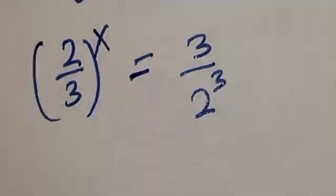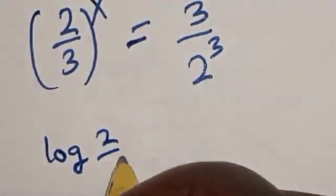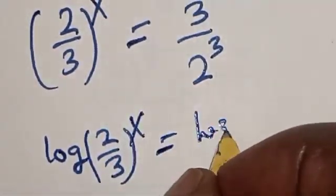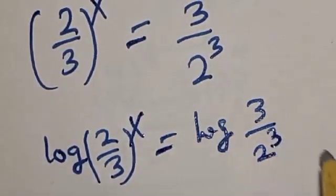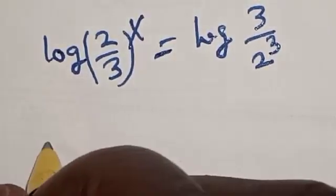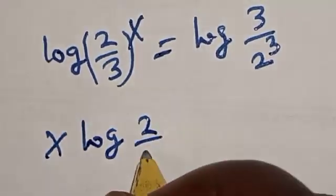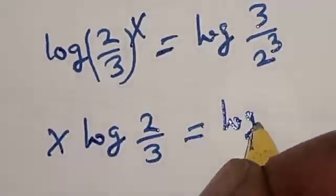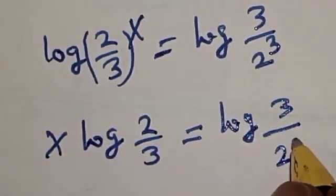Let's take the log of both sides. This gives us: log of (2 over 3) raised to the power s is equal to log of (3 over 2) raised to the power 3.